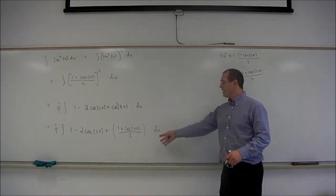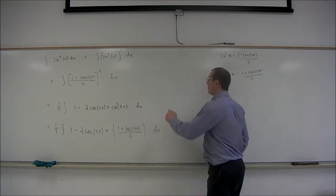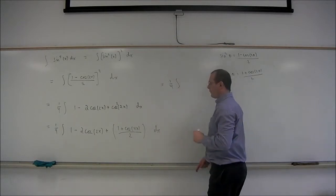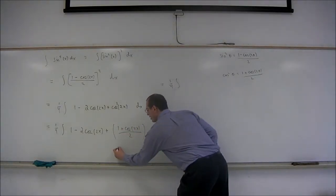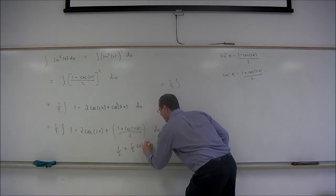So now we're ready, we can basically integrate this. I just want to do a small step first. So this is 1 fourth integral of, I would like to split this up as 1 half plus 1 half cosine of 4x.